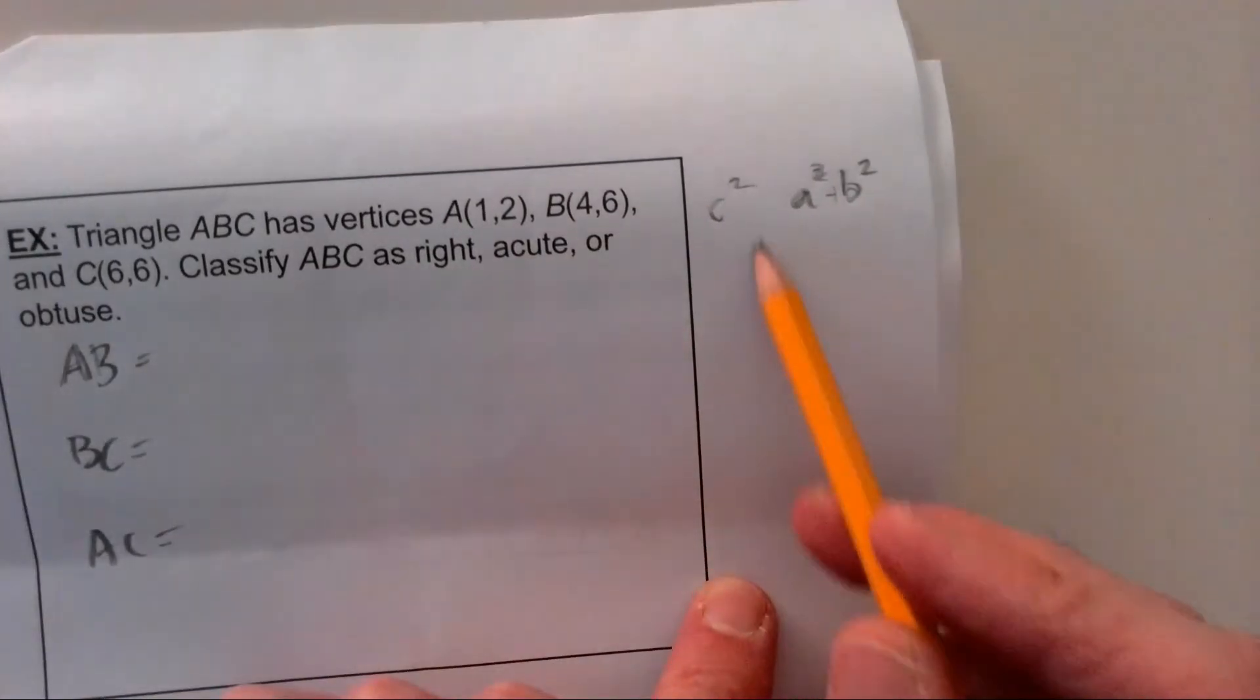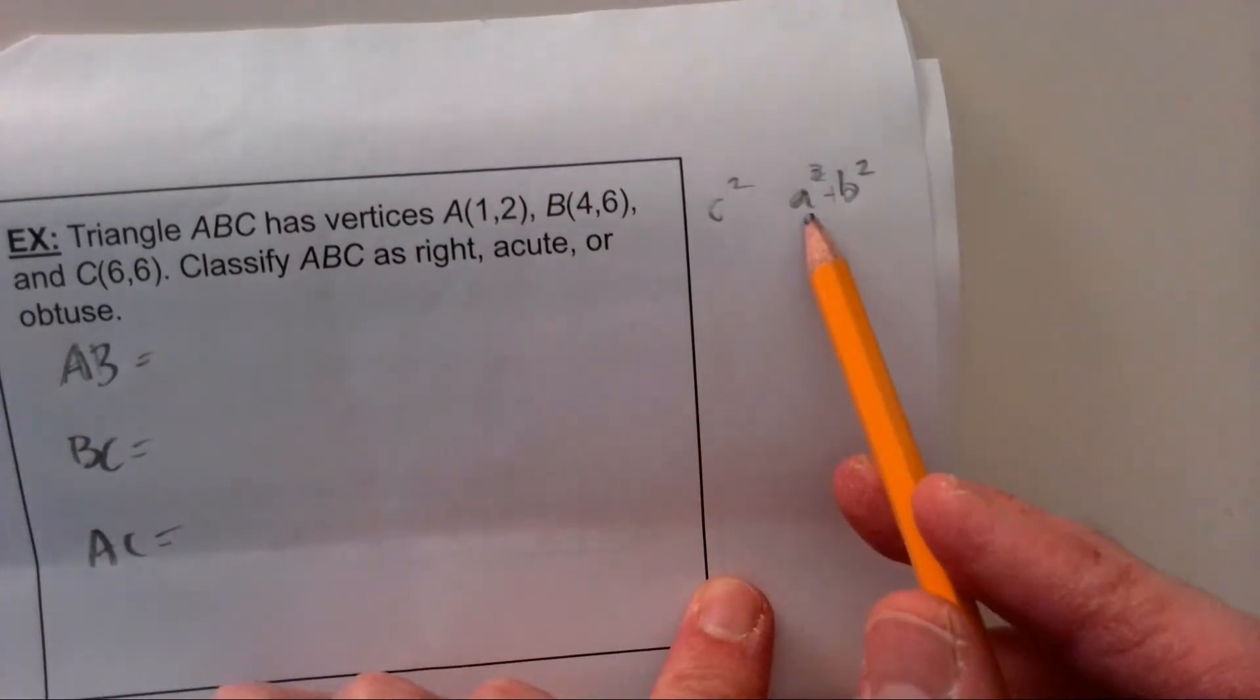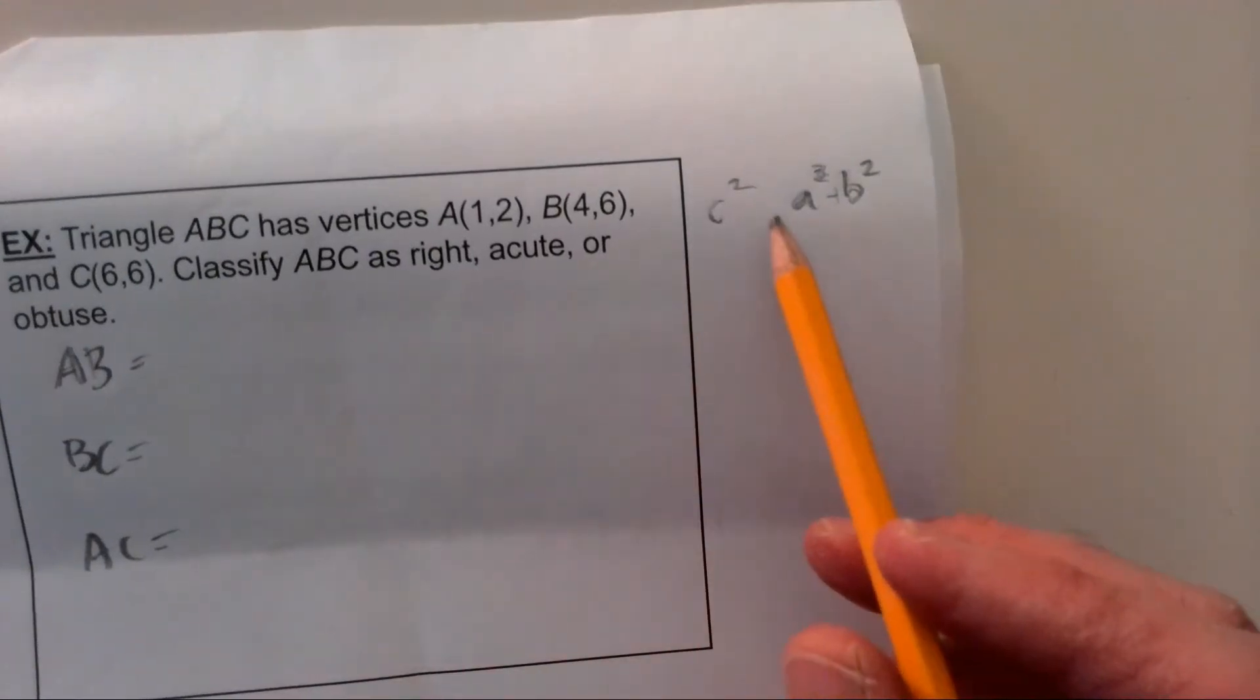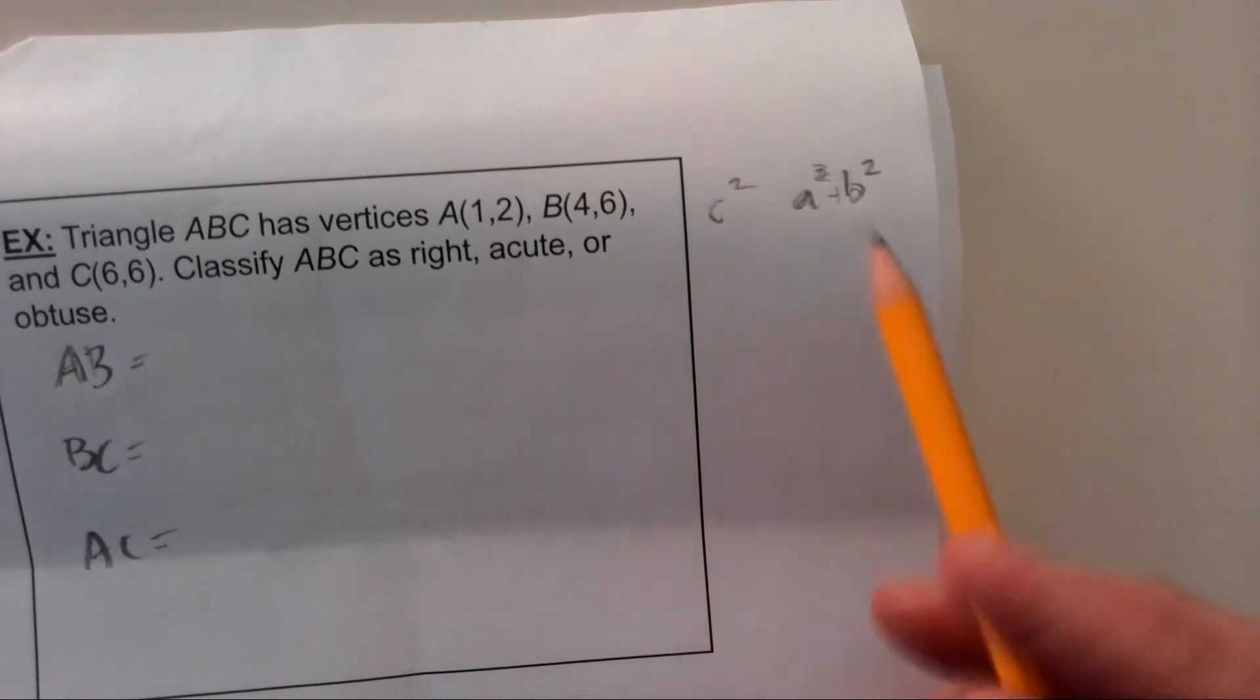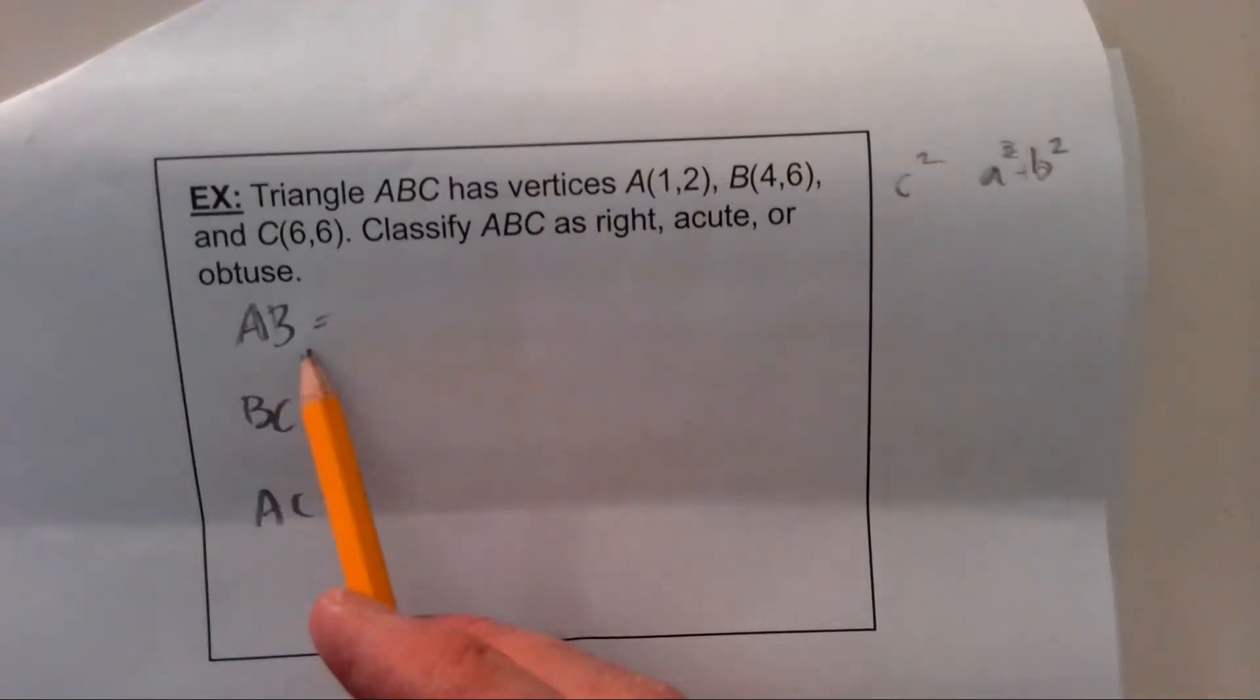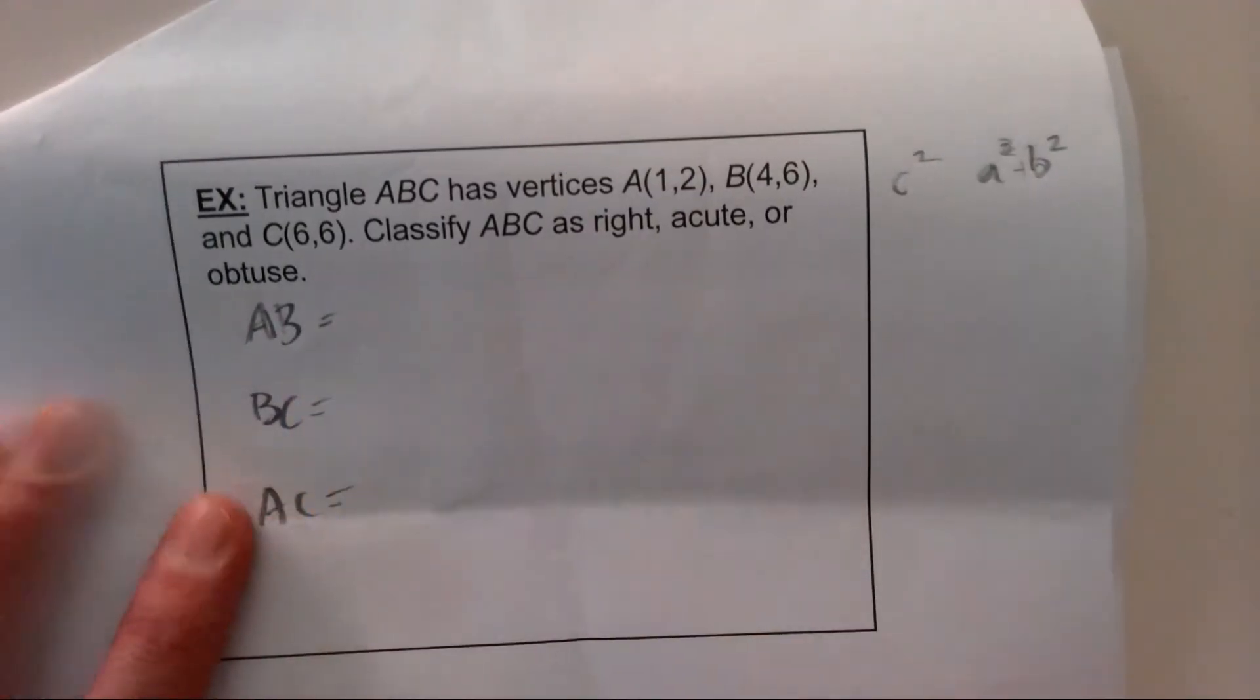We saw in the first video that if c squared equals a squared plus b squared, this would be a right triangle. If c squared is greater, this will be obtuse, and if c squared is less than a squared plus b squared, it will be acute. So how do we find those lengths? Distance formula. You should all really know that formula like the back of your hand.